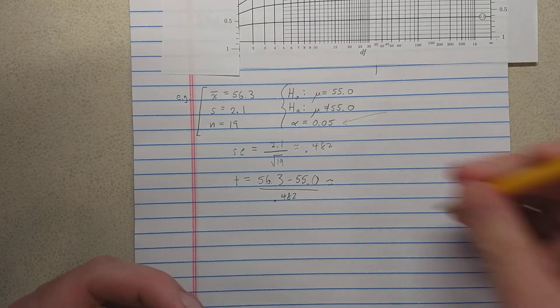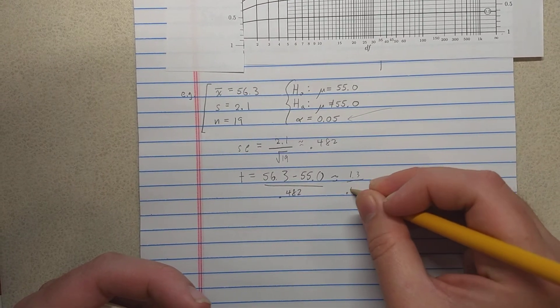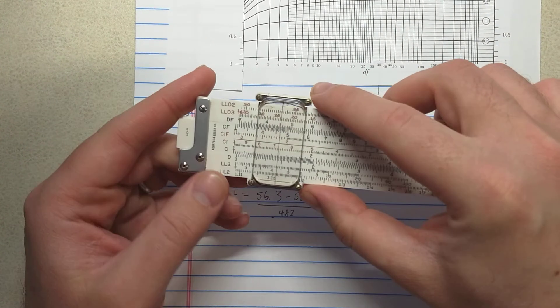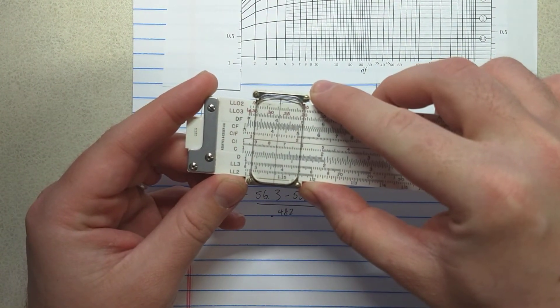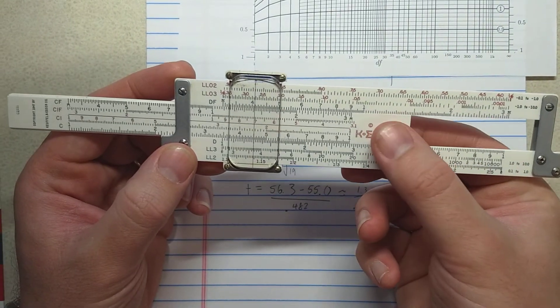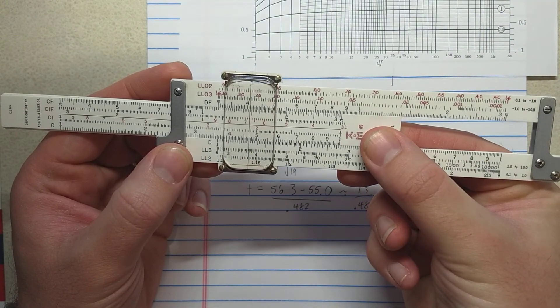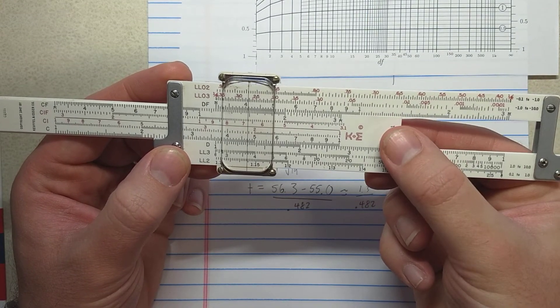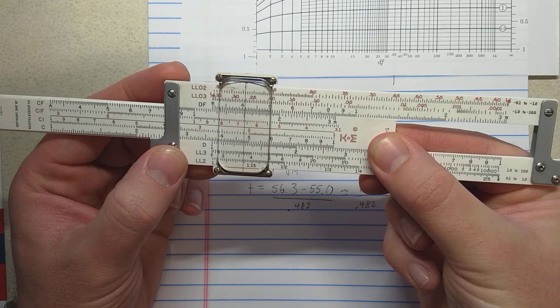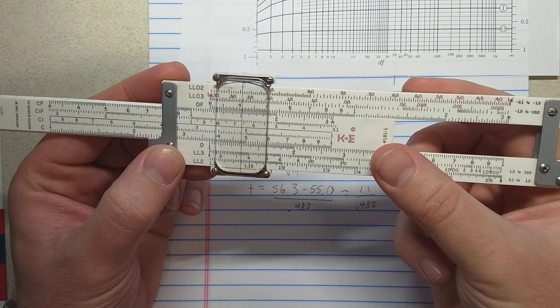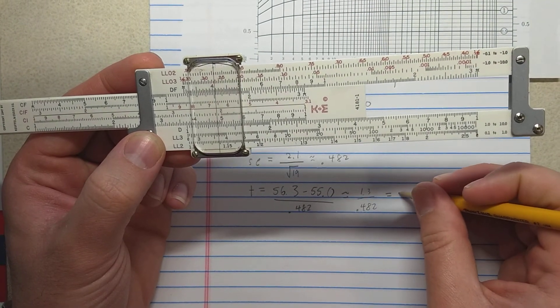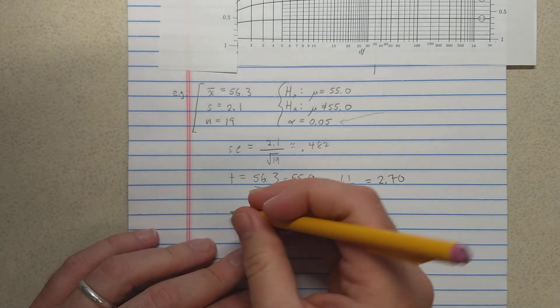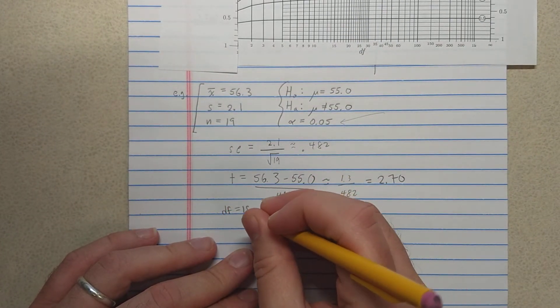And let's try that. So here that's 1.3 over 0.482. And let's see, 0.482, and I'm getting a result here about 2.70. All right, so degree of freedom here should be 18, 19 minus 1.